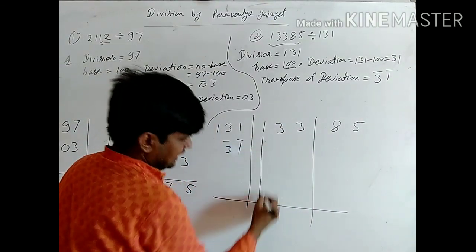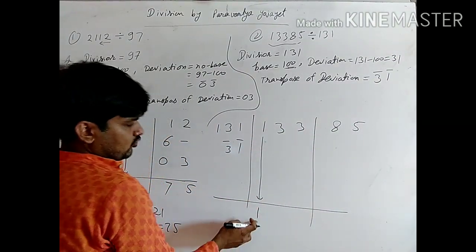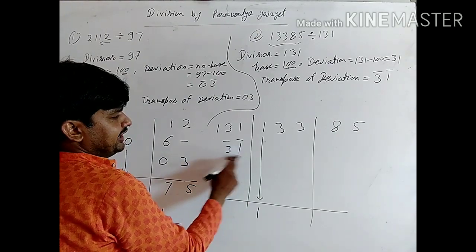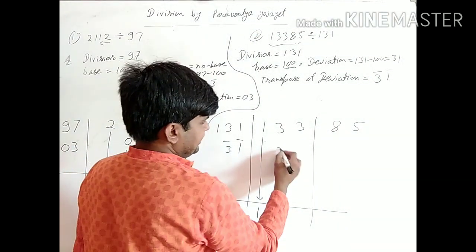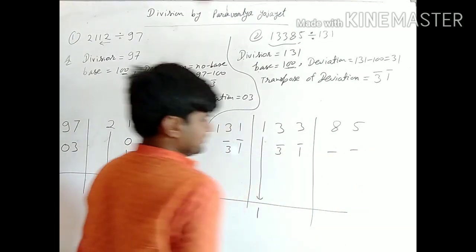Now see, the first one's sum we get 1. 1 multiply by negative 3, negative 1, then we get negative 3, negative 1. This is the dash.